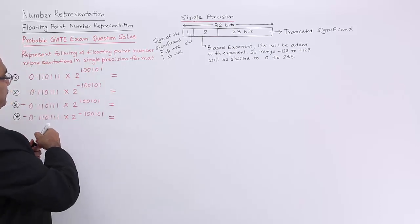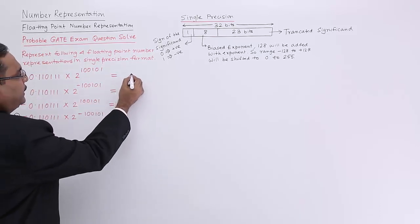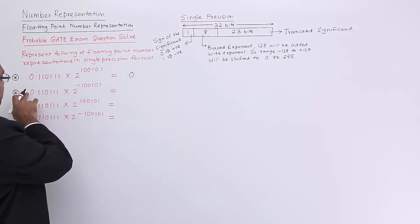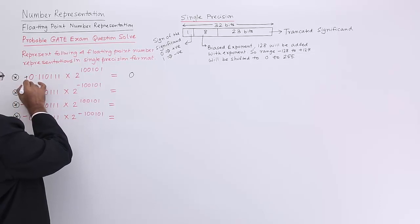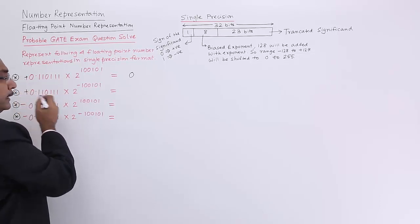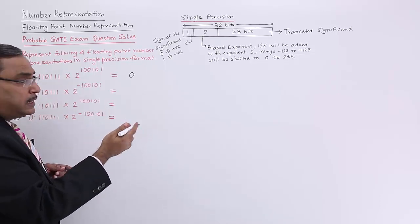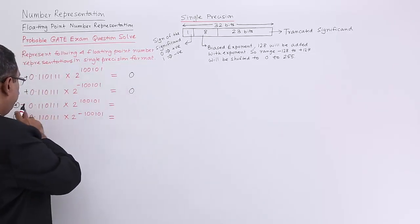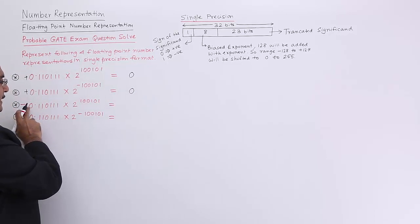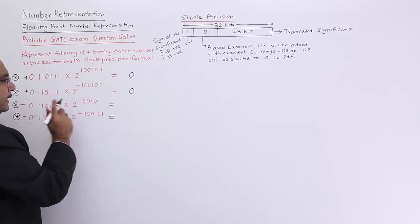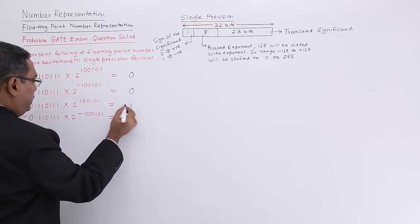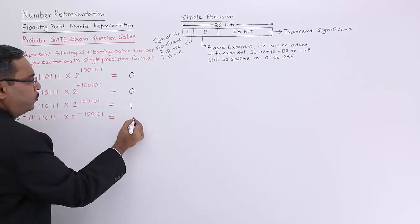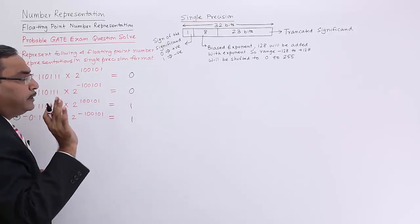Here the significand is positive, so I am putting 0. Here it is also positive, so it will be 0. Here the significand is negative, so it will be 1. And here the significand is also negative, so it will be 1.